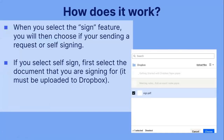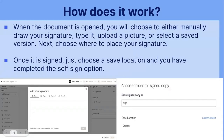When you select the sign feature, you will then choose if you're sending a request or self-signing. If you select self-sign, first select the document that you're signing — it must be uploaded to Dropbox. Once you select which document you're signing, you will click the checkbox and then select choose. When the document is open, you will choose to either manually draw your signature, type it, upload a picture, or select the saved version. Next, you will choose where to place your signature. Once it is signed, just choose a saved location and you have completed the self-signed option.